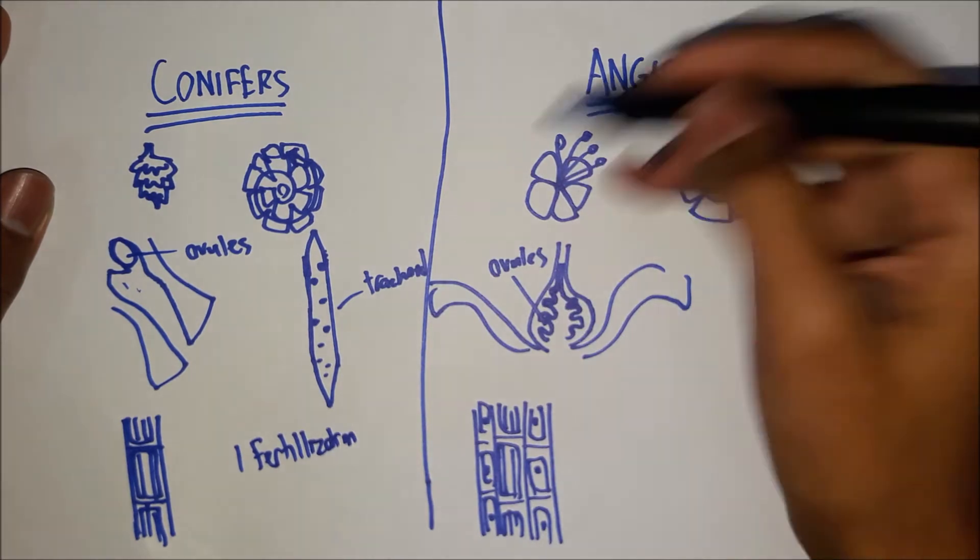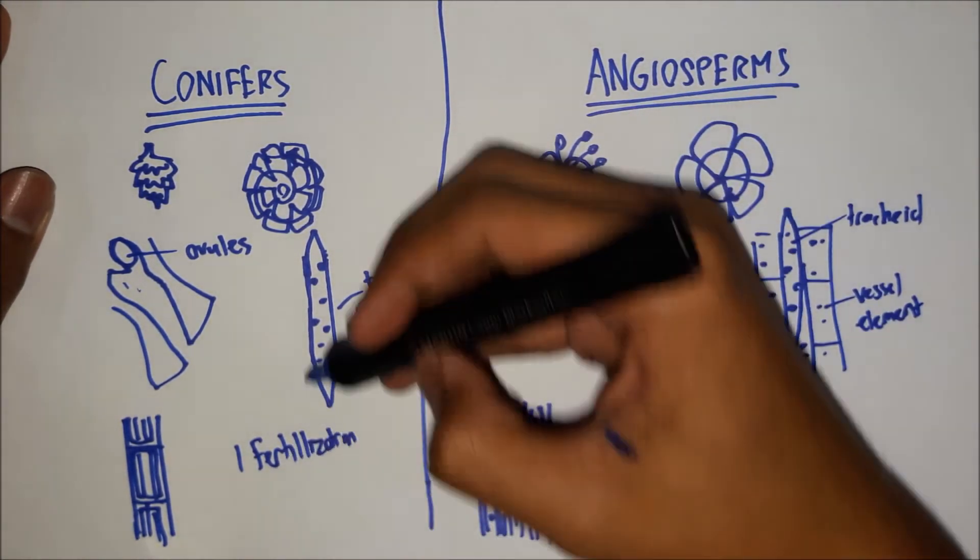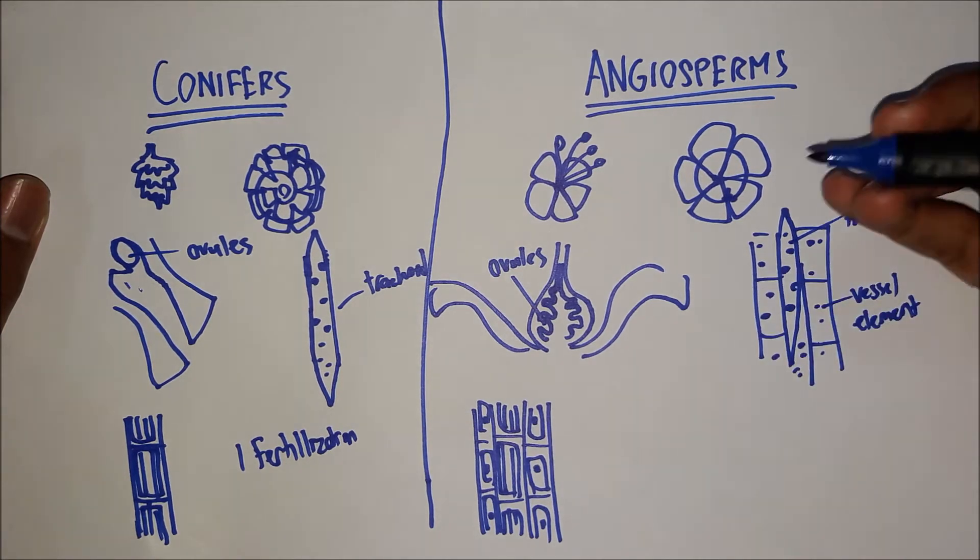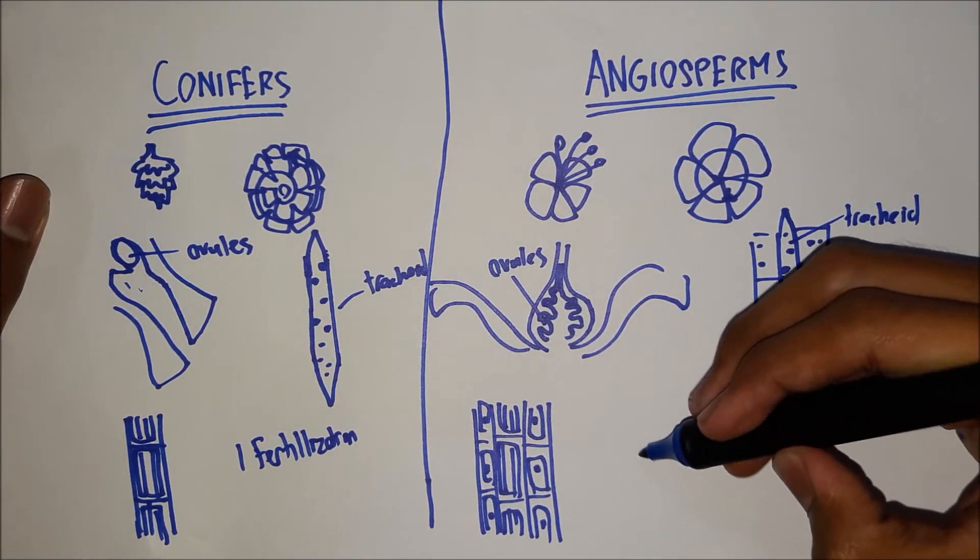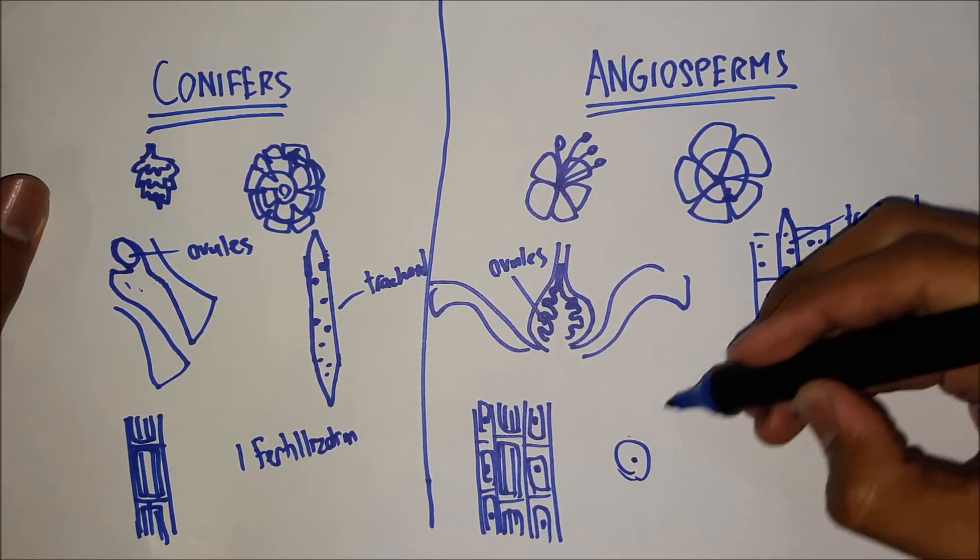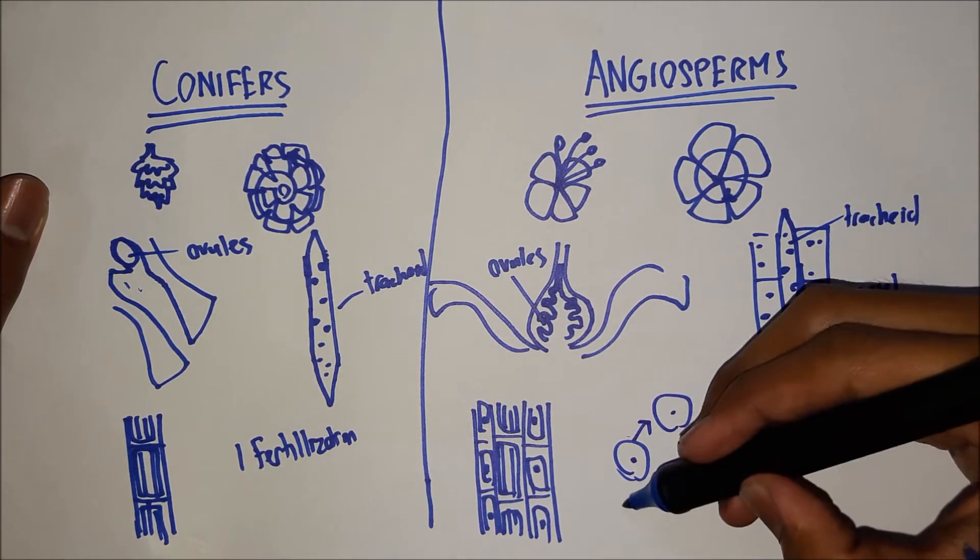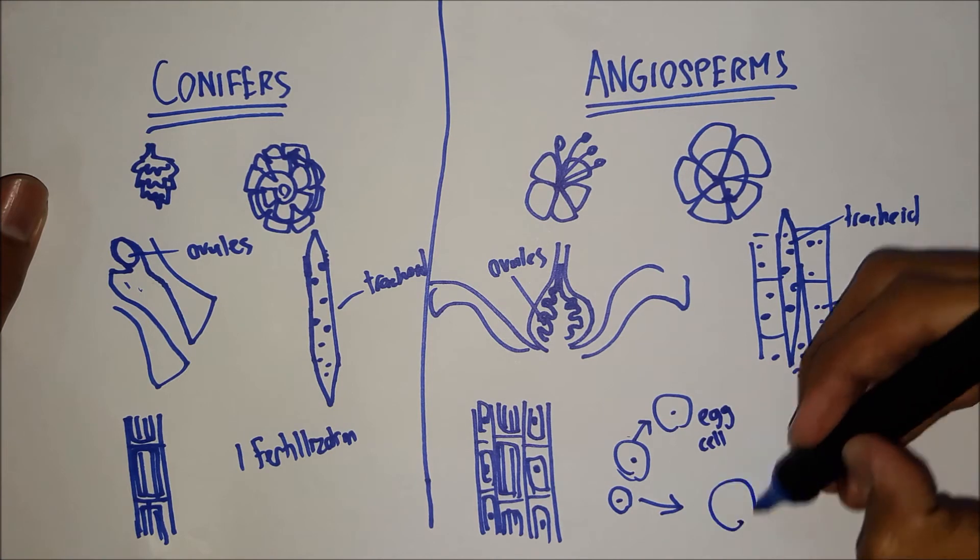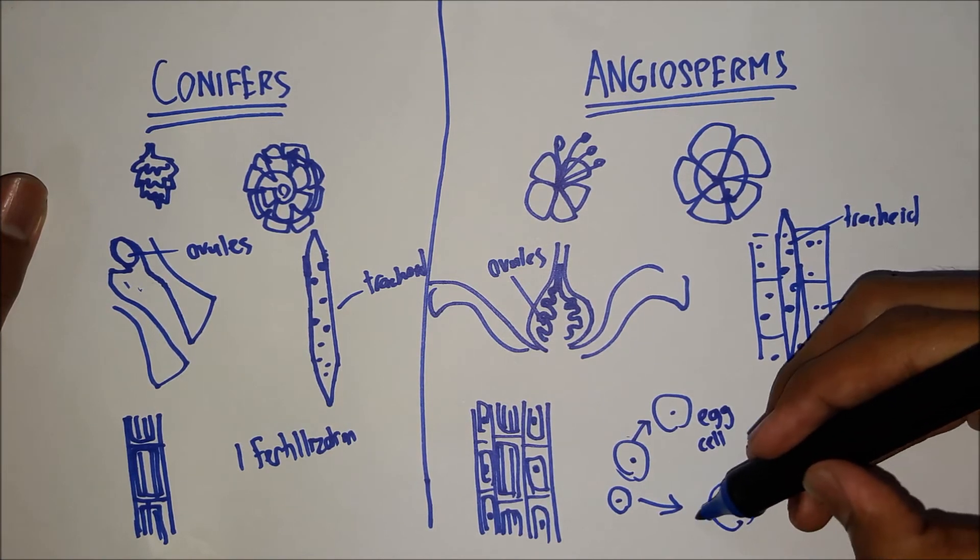While in angiosperms, there occurs double fertilization, where the male gamete fertilizes an egg cell, and another male gamete fertilizes the polar nuclei.